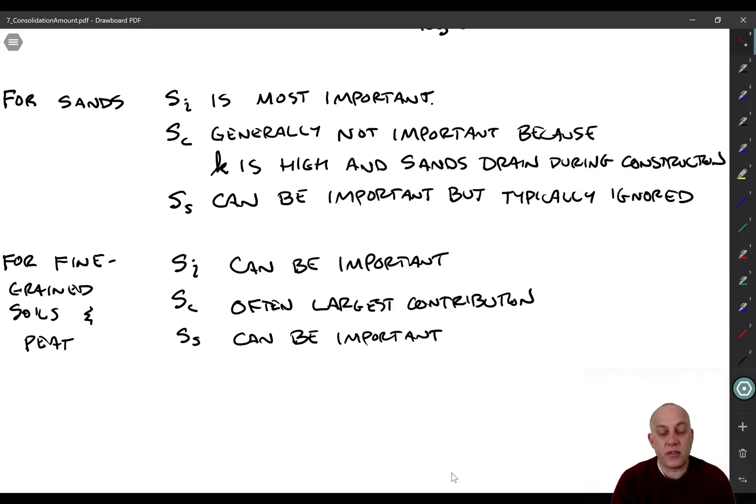Alright, and when we go to fine-grained soils and organic soils like peat, all of them really can be important. Immediate settlement can be important. Alright, so when you load it, you get that shear deformation mechanism happening, you can get quite a bit of immediate settlement. Consolidation is often the largest contribution, especially if you're loading the soil beyond the load that it's ever experienced in the past. It's an important concept that we'll talk about probably in the next lecture and the one after that. And then secondary compression also can be important, actually for peat. For organic soils, it can be the dominant source of settlement. So it's important to consider it. It's often ignored, but it can be important to consider.